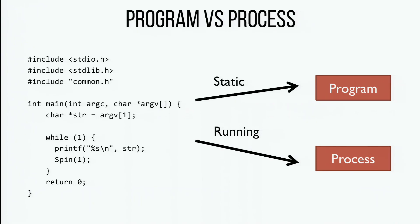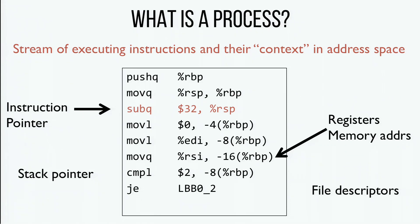Let's talk about what's actually going on in a process. A program is the static code you wrote and saved — even a compiled executable is still just a program. But when you actually run that thing, that's when it becomes a process. For a single program you could have multiple processes — you could start it multiple times and have them all running concurrently. A process is a stream of executing instructions, running sequentially until you hit a branch or jump.